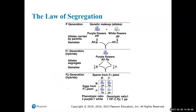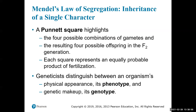The square we use to figure out these ratios is called a Punnett square. It has four possible combinations of gametes, and the resulting four possible offspring show up in the F2 generation. Each square represents an equally probable product of fertilization — a one-in-four or 25% chance. We also distinguish between the physical appearance, which is the phenotype, and the genetic makeup, which is the genotype — whether the flowers are homozygous dominant, homozygous recessive, or heterozygous.